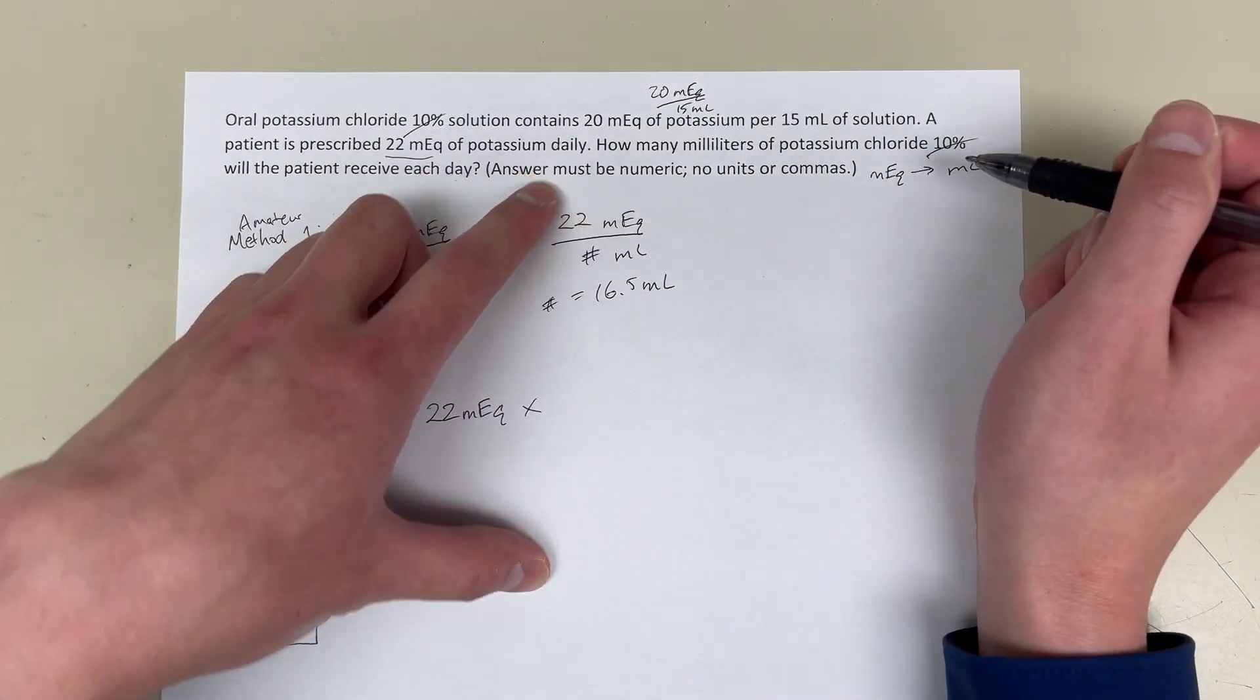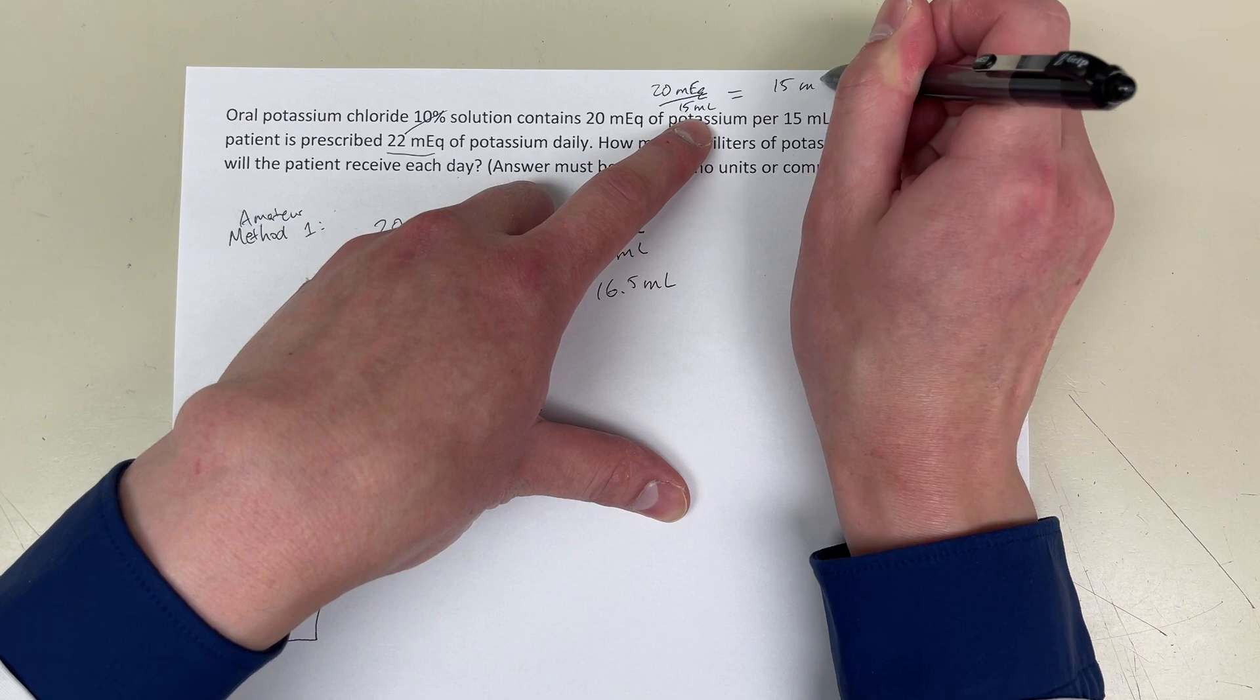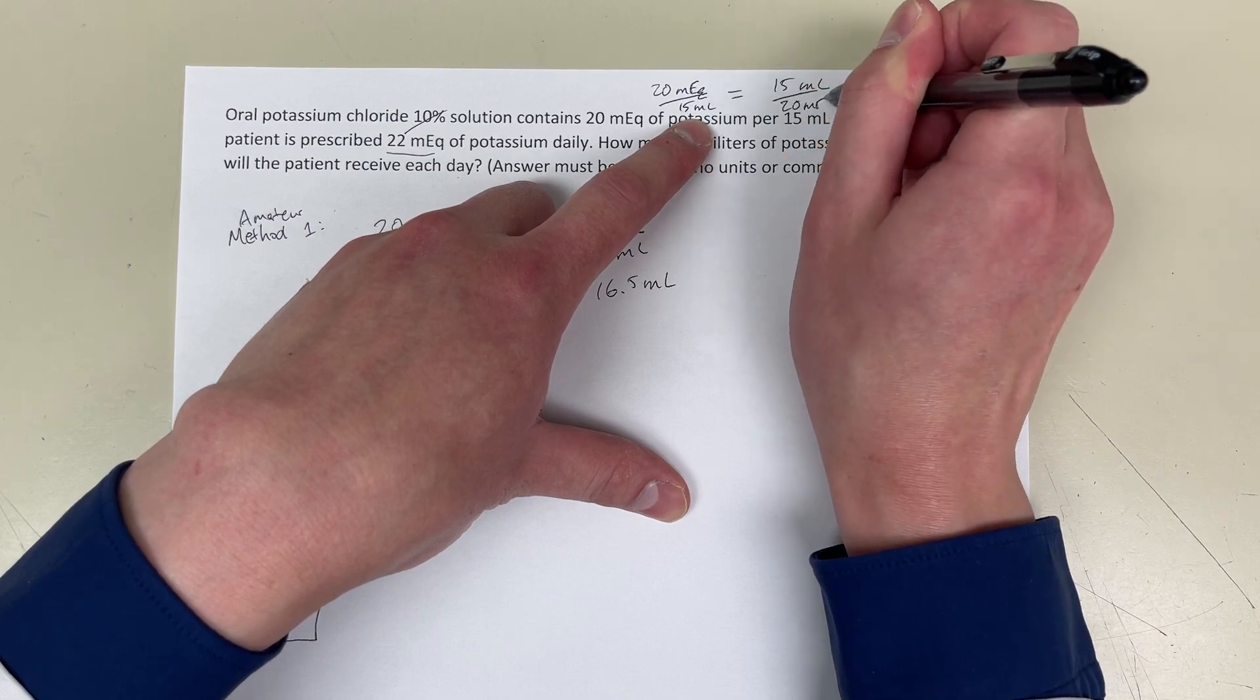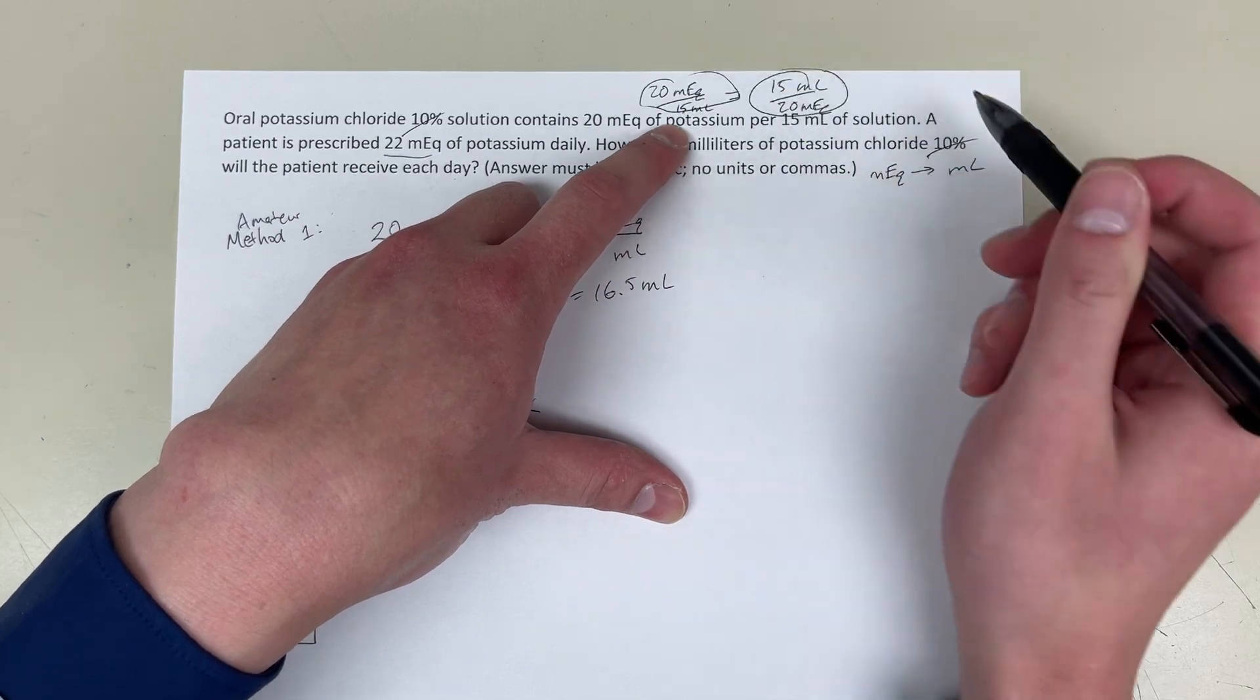Also, realize that this is the same thing as this: 15 milliliters per 20 milliequivalents. Right? These two numbers, these two fractions here are exactly the same.